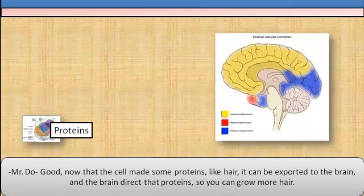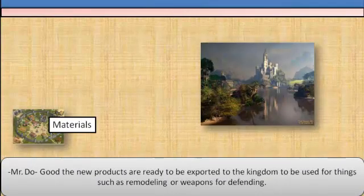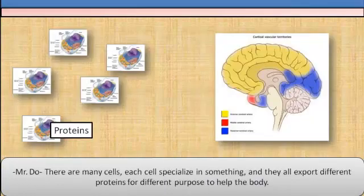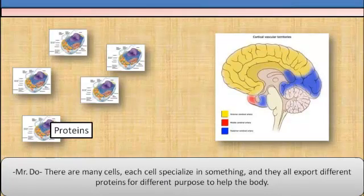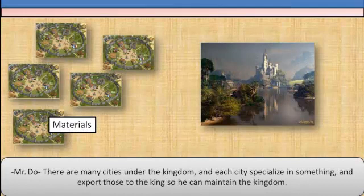Now that the cell has made some proteins, like hair proteins, they can be exported to the brain, and the brain directs the proteins so you can grow more hair. The new products are ready to be exported to the kingdom, to be used for things such as remodeling or weapons for defending. There are many cells, each specializing in something, and they all export different proteins for different purposes to help the body. There are many cities under the kingdom, each specializing in something, and they export those goods to the king so he can maintain the kingdom.